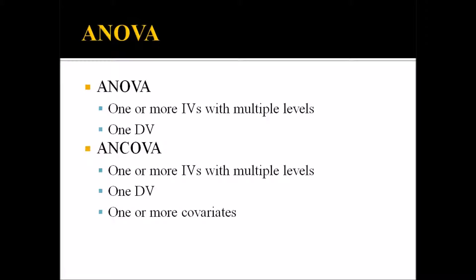ANCOVA is really the same thing as ANOVA, except you add one or more covariates into the analysis. For example, say you had one independent variable with two levels — CBT and a control group — and one dependent variable. But participants in your study all use alcohol, and you're worried that the alcohol could be contributing to the depression. So you want to control for the amount of alcohol use. That's called a covariate — you want to partial that variable out — and to do that, you would use ANCOVA.